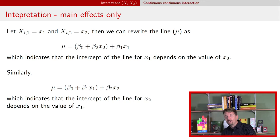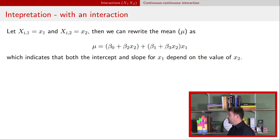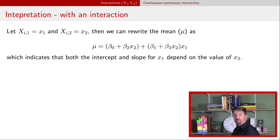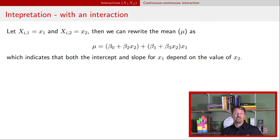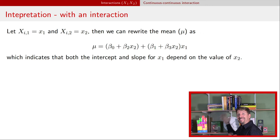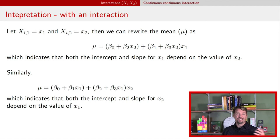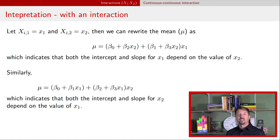In contrast, in the model with an interaction, if we combine terms related to x1, we get an intercept of (beta-naught plus beta-2 times x2) and a slope of (beta-1 plus beta-3 times x2) for x1. Both the intercept and the slope now depend on the value of x2. The effect of x1 is beta-1 plus beta-3 times x2, which depends on x2. Similarly, the slope for x2 is beta-2 plus beta-3 times x1, so the effect of x2 depends on x1.